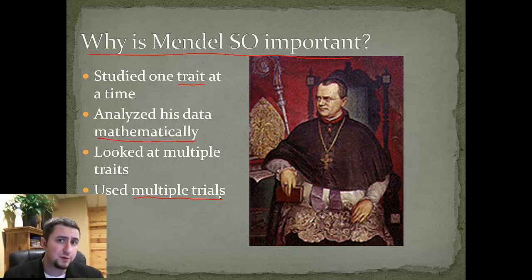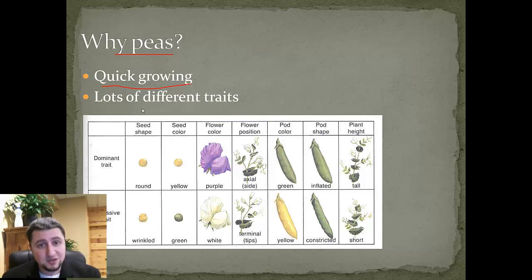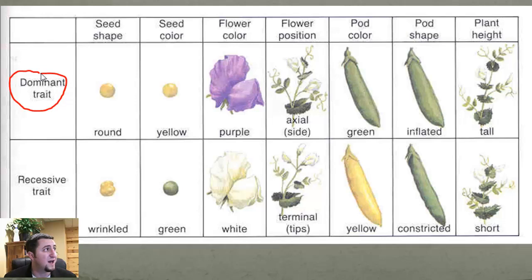Why did he use peas? Mainly because they are very quick growing — a pea plant can shoot up from the ground in just a matter of weeks. Also, peas, much like us human beings, have lots of different traits. You can have seeds that are round or wrinkled, yellow or green seeds, purple or white flowers, green or yellow pods, and tall or short plants. What he found is that some traits are dominant over others, and some are recessive, where they get masked by the dominant trait.